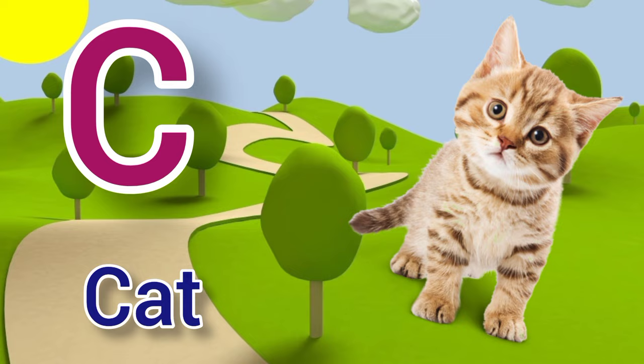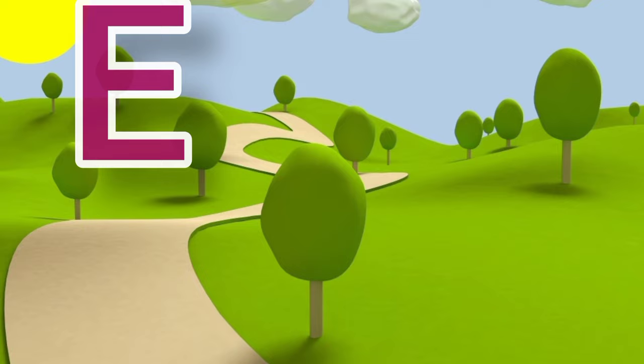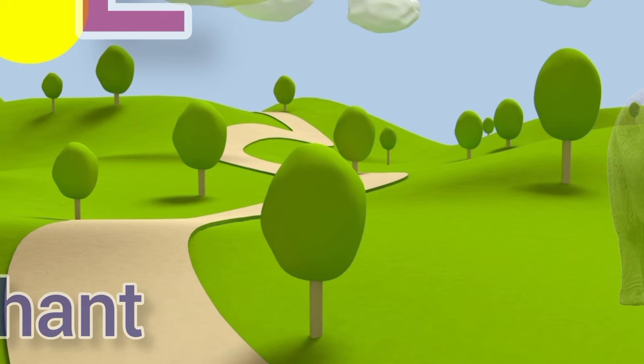C for cat, cat means billy. D for dog, dog means kutta. E for elephant, elephant means hathi.